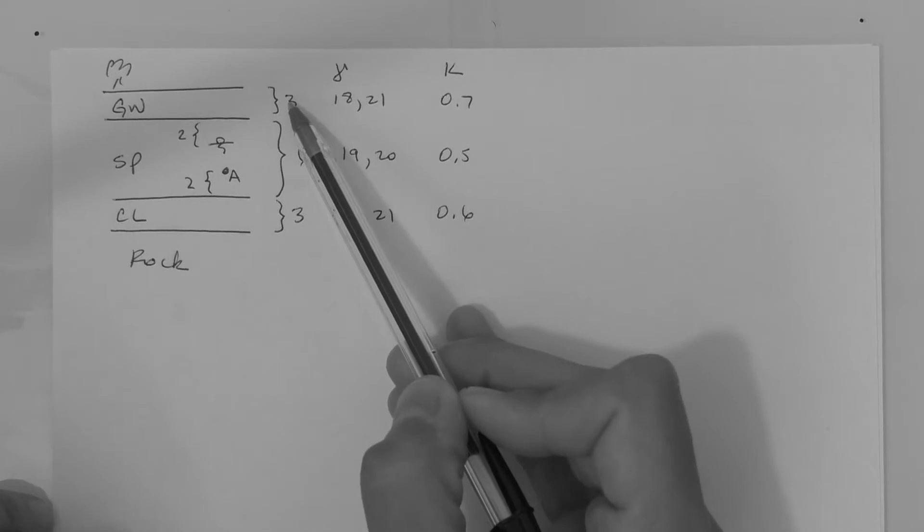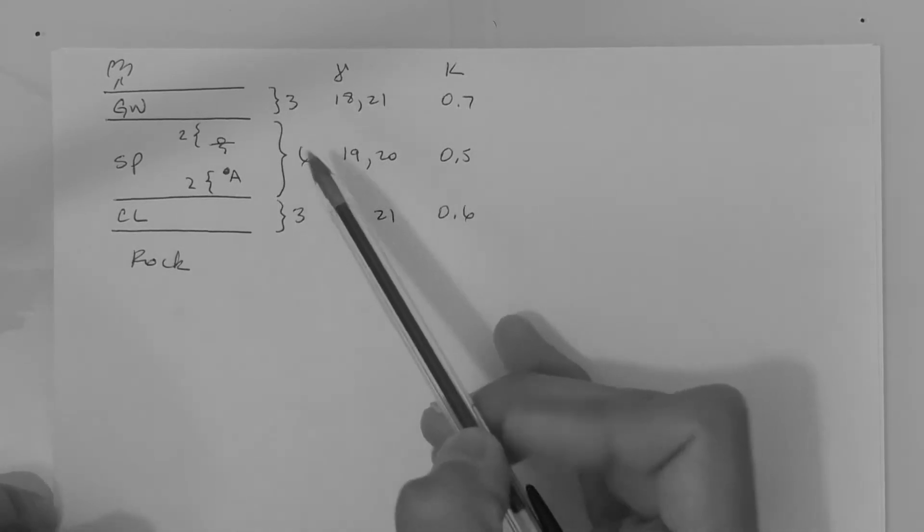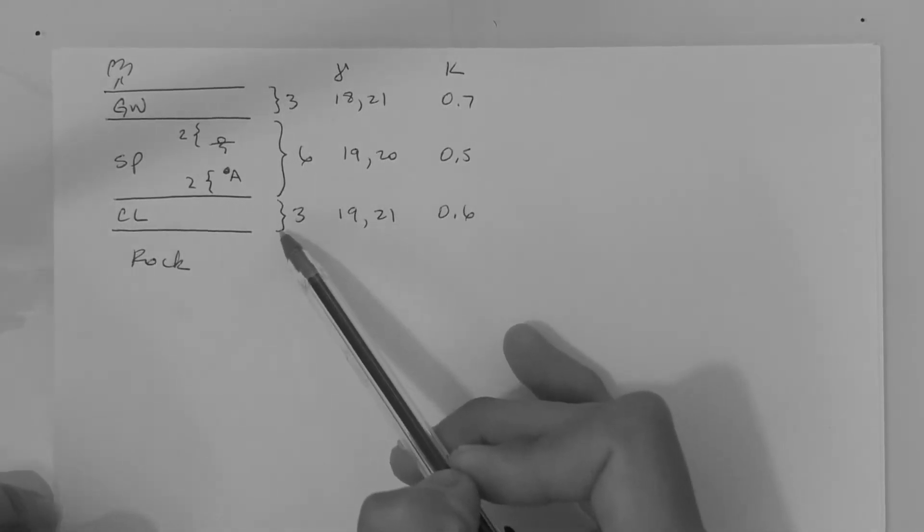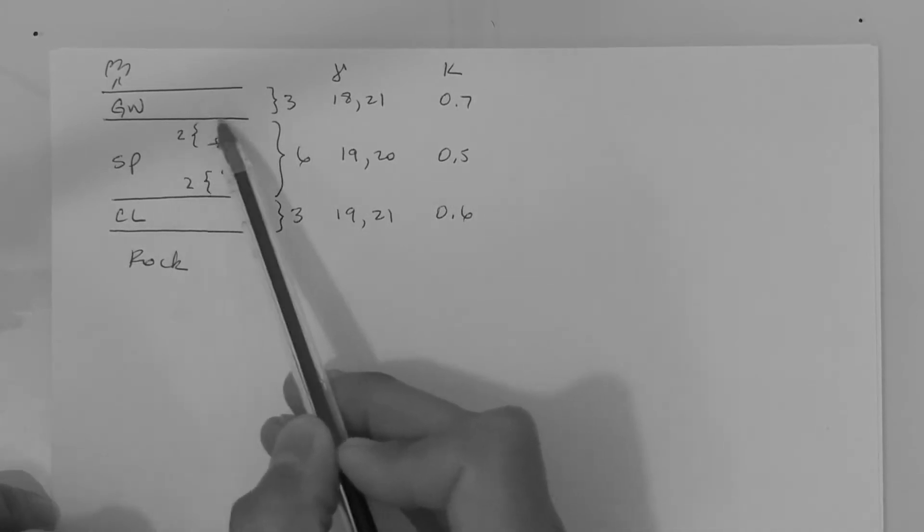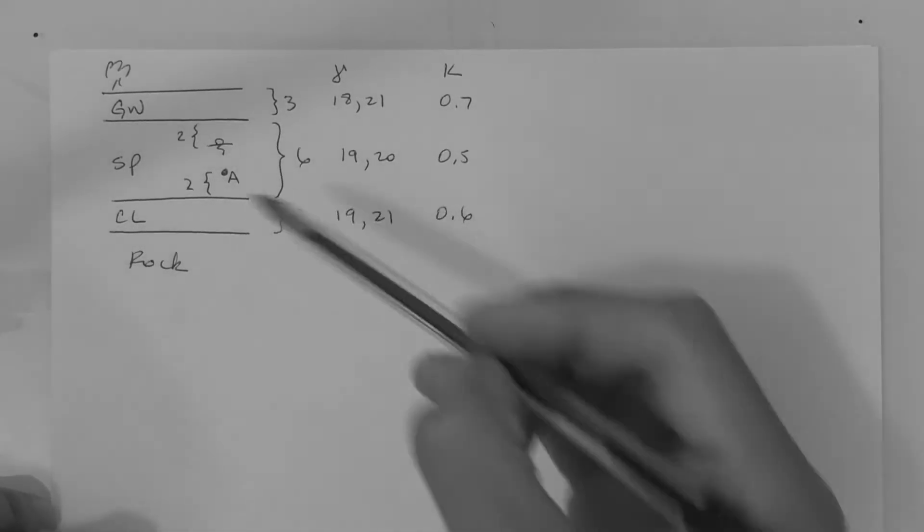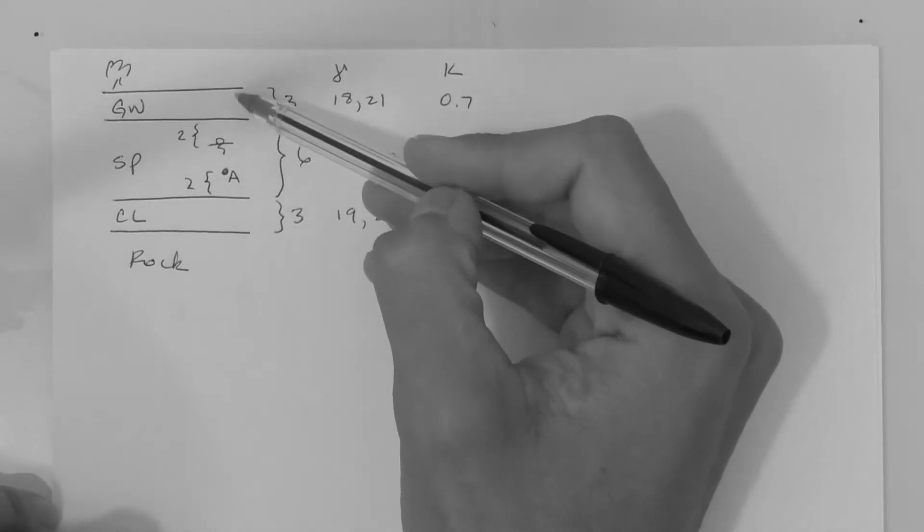The gravel layer is 3 meters thick, the sand is 6 meters thick, and the clay is 3 meters thick. The water table is 2 meters under the interface between the gravel and the sand, which means it's 5 meters underground.